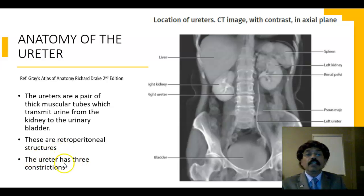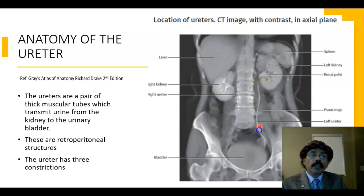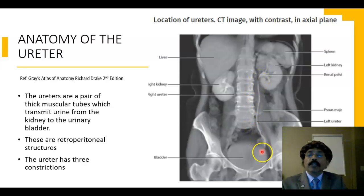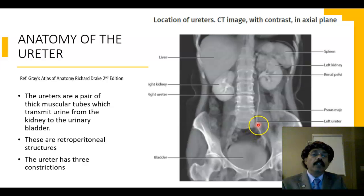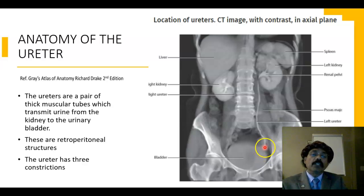The ureter has three constrictions. The upper dilated part of the ureter is called the renal pelvis, and it opens to the urinary bladder. The three constrictions are: one at the junction between the renal pelvis and the ureter proper; another one where it crosses the pelvic brim over the bifurcation of the common iliac arteries; and another one in the wall of the urinary bladder. At the level of the ischial spine, the ureter penetrates the muscular wall of the urinary bladder obliquely, and that oblique passage inside the wall of the bladder forms a sphincter.